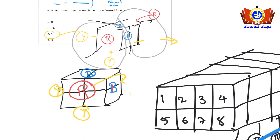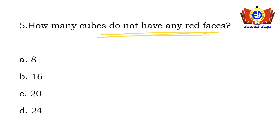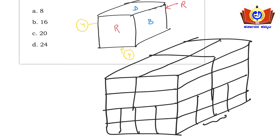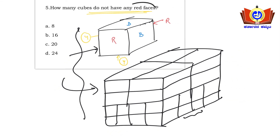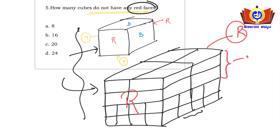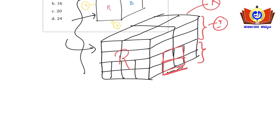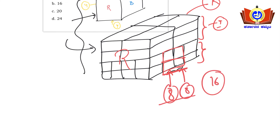Next question: how many cubes do not have any red faces? The red faces are on opposite sides. From the upper cube (piece one), none of the cubes will be without red. From the lower piece (32 cubes), two sets of cubes — those not touching the red face. Each set has 8 cubes, so 8 + 8 = 16. The answer is 16.